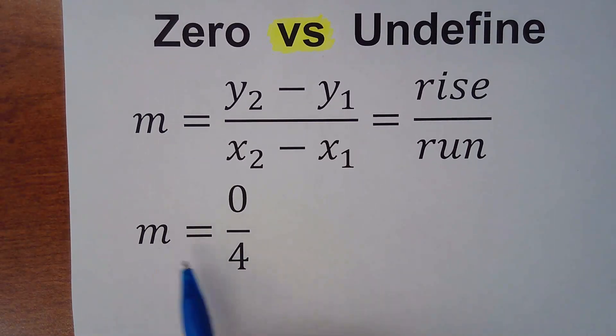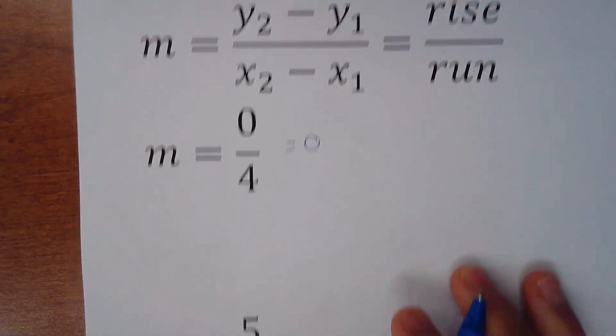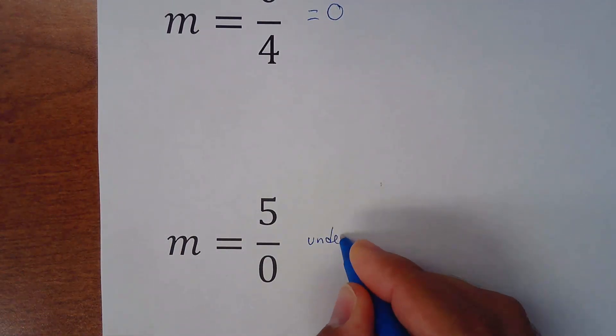In this case, when the zero is in the numerator, the answer will be zero. And when the zero is in the denominator, the answer would be undefined.